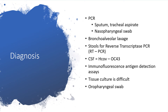To make the diagnosis, we can take sputum from the affected person and run polymerase chain reaction. If the person cannot expectorate — perhaps because he or she is too young or is debilitated and very sick — you can use tracheal aspirate. You can also use a nasopharyngeal swab. Bronchoalveolar lavage is possible, as is reverse transcriptase polymerase chain reaction. Lumbar puncture to obtain cerebrospinal fluid is an option. Antigen detection assays are also possible. Tissue culture, however, is very difficult. Oropharyngeal swab for PCR is also available.